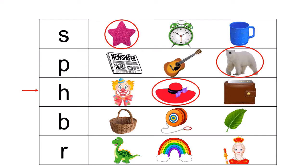Let us look at this letter. Can you tell me the name of this letter? Very good children. This is letter B, and B makes the sound B. Look at these three pictures: there is a basket, a yo-yo, and a leaf. Which picture begins with the B sound? Excellent! Basket begins with the B sound.